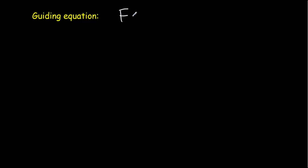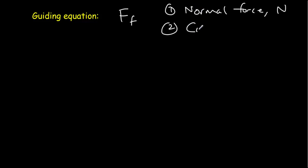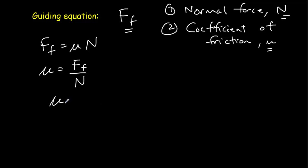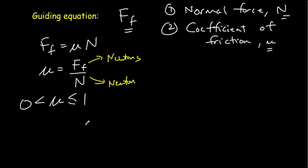So let me recap. The force of friction depends on two factors: the normal force, and the nature of the surfaces summarized in the coefficient of friction. The relationship is as simple as it could be: the force of friction equals the coefficient times the normal force. Rearranging, the coefficient equals the force of friction divided by the normal force. Since we're dividing a force by a force — newtons divided by newtons — the coefficient is unitless. So μ is really a fraction of the normal force.